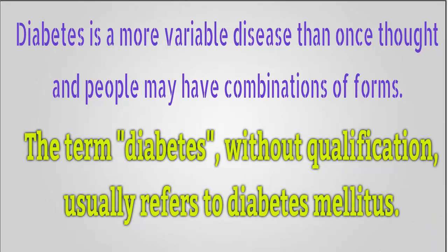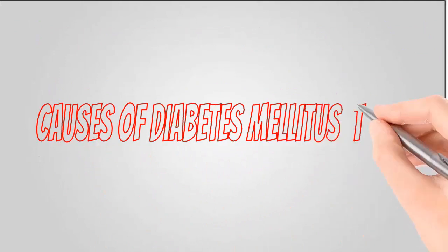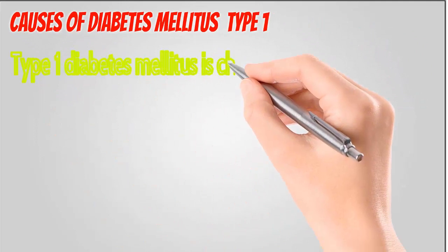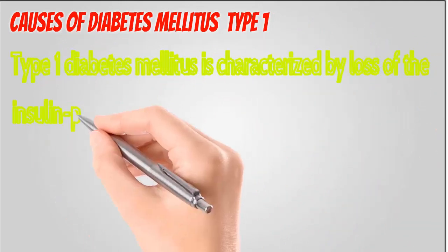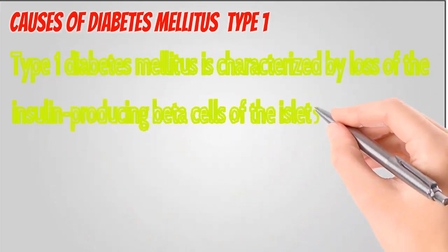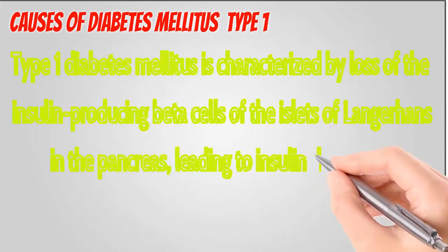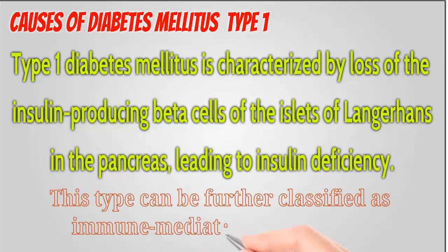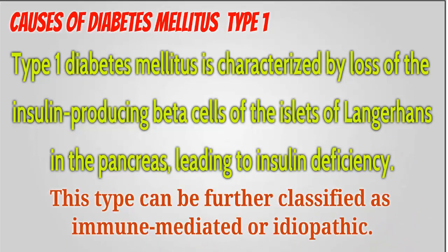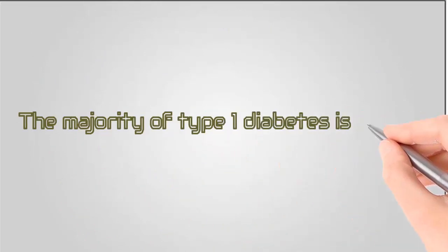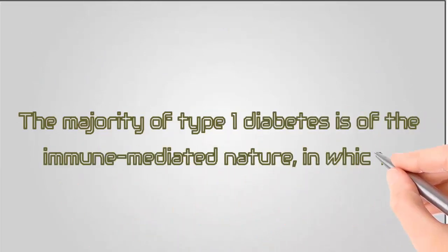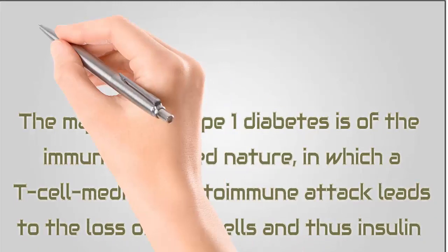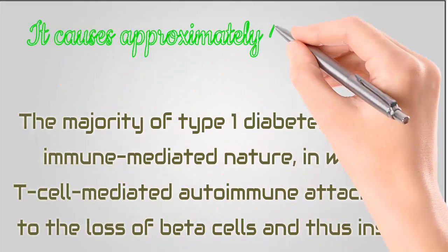Type 1 diabetes mellitus is characterized by loss of the insulin-producing beta cells of the islets of Langerhans in the pancreas, leading to insulin deficiency. This type can be further classified as immune-mediated or idiopathic. The majority of type 1 diabetes is of the immune-mediated nature, in which a T-cell mediated autoimmune attack leads to the loss of beta cells and thus insulin.